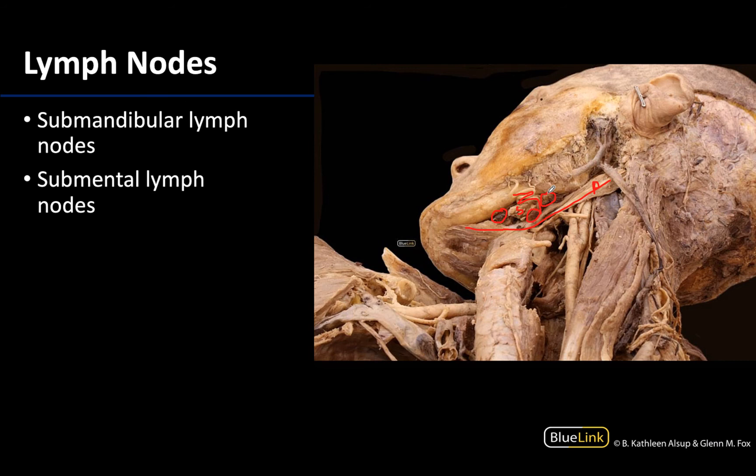Many smaller and not visible lymph vessels from a wide variety of areas will drain into the submandibular lymph nodes — such as vessels from the nose or the cheek, and some from the upper and lower lip regions are all draining towards these lymph nodes.